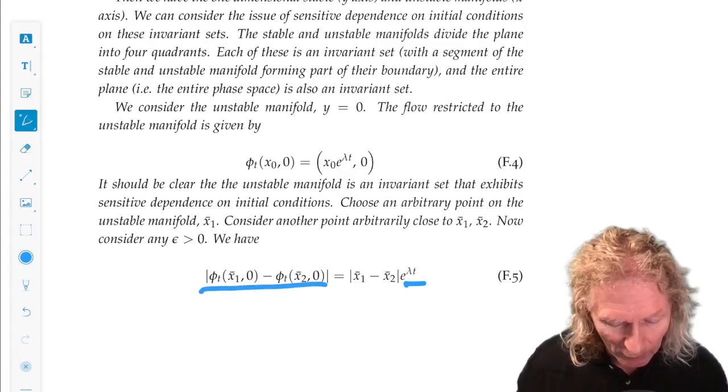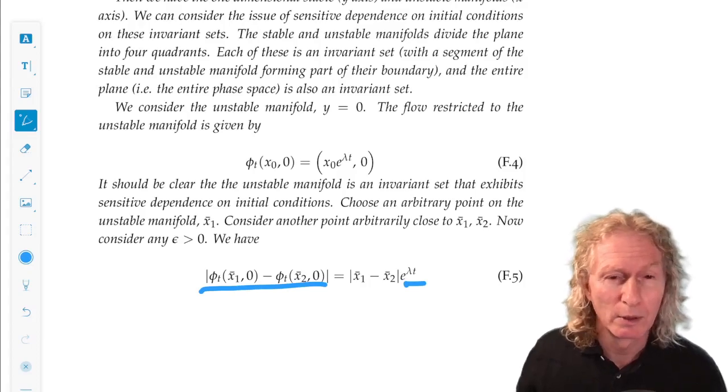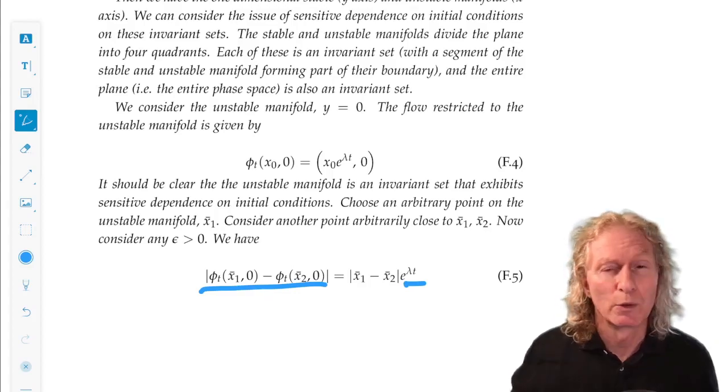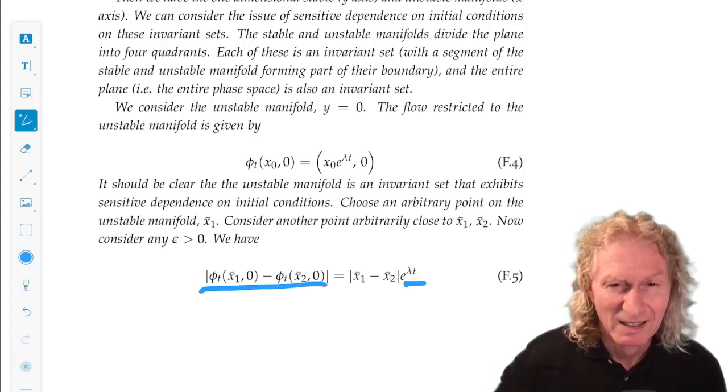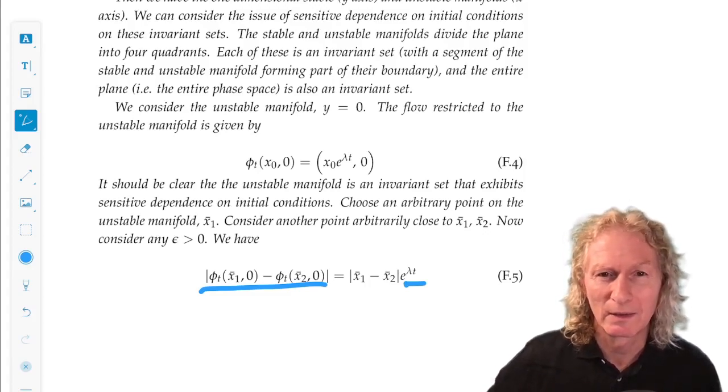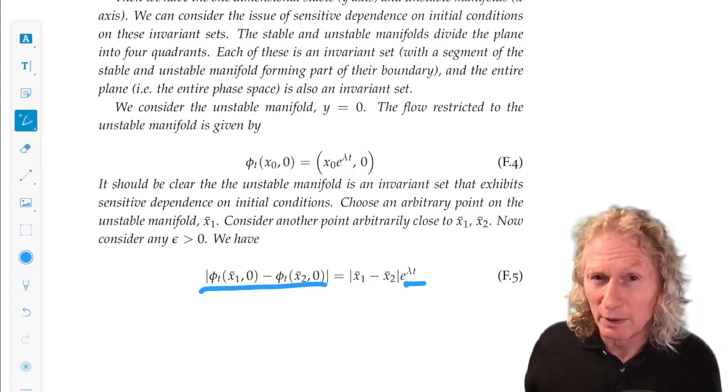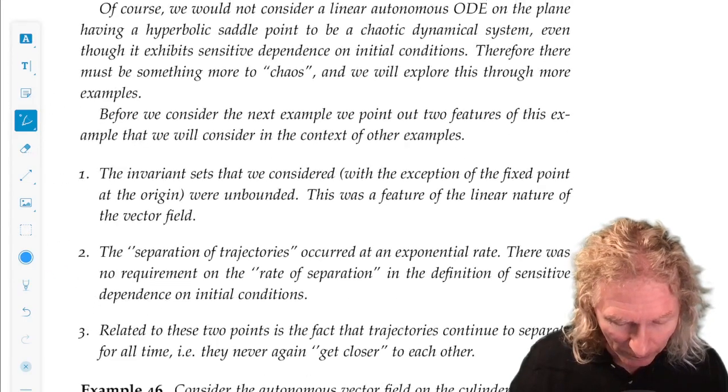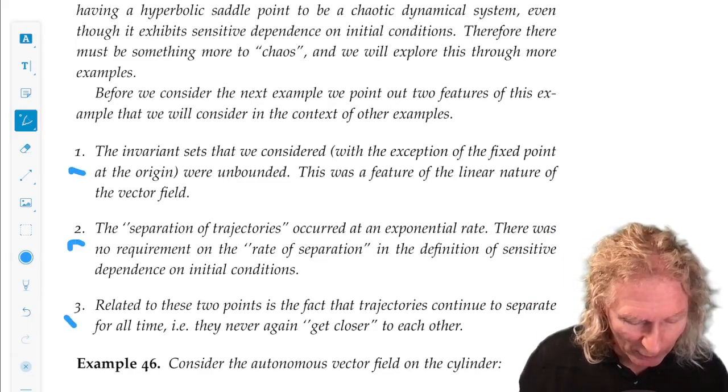If I start in any one of these regions, because we have this component of the flow, the x component and the y component, they all exhibit sensitive dependence on initial conditions. They run off to infinity trajectories, and the distance gets further and further apart. Is the autonomous saddle point in the plane a chaotic set? No, I don't think anyone one of us would press that point. You can solve the equations for the trajectories exactly, but it does exhibit sensitive dependence on initial conditions.